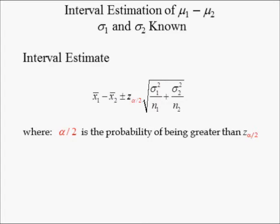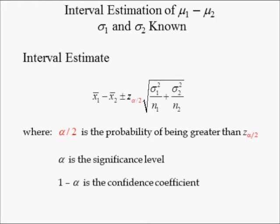z subscript alpha divided by 2 is found using the standard normal table. Alpha divided by 2 is the probability that z is greater than z subscript alpha divided by 2. Alpha is called the significance level; it is divided by 2 because confidence intervals have two tails. 1 minus alpha is called the confidence level. The probability of being in each tail is alpha divided by 2, the total probability in the tails is alpha, and the probability of not being in the tails is 1 minus alpha.